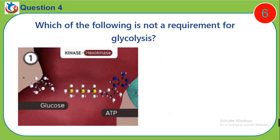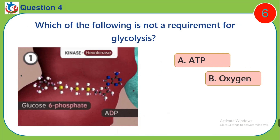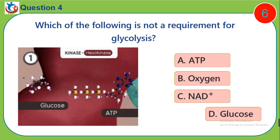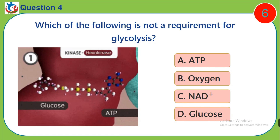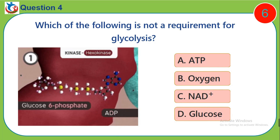Question 4. Which of the following is not a requirement for glycolysis? A. ATP. B. Oxygen. C. NAD+. D. Glucose.